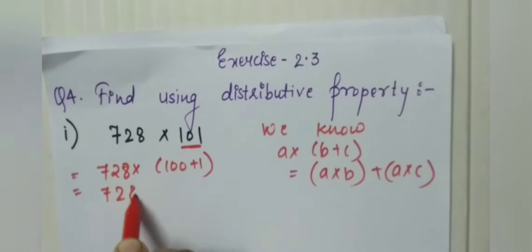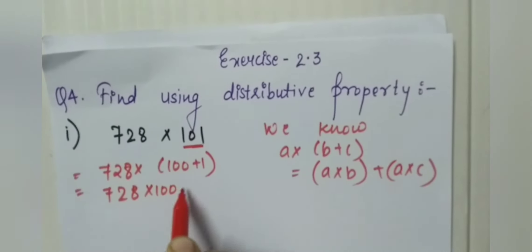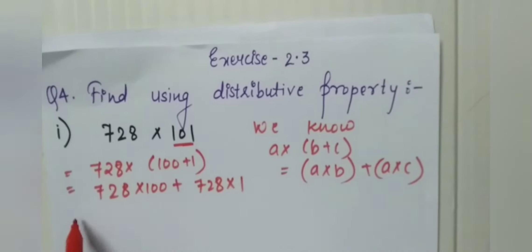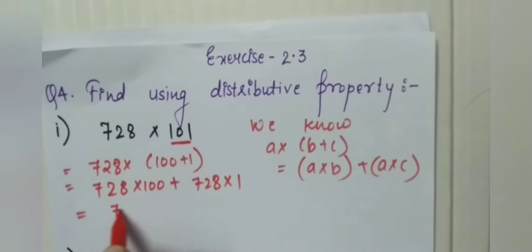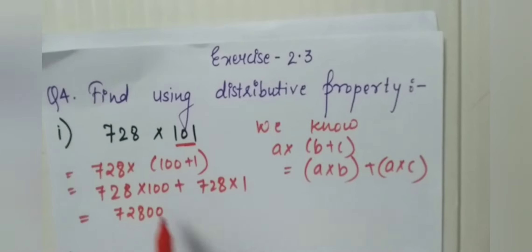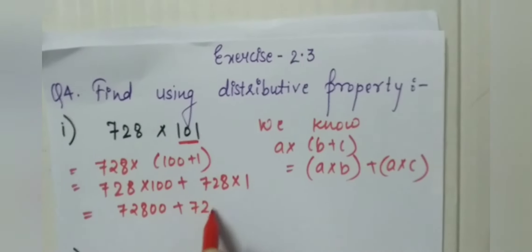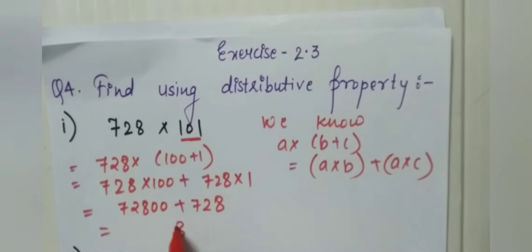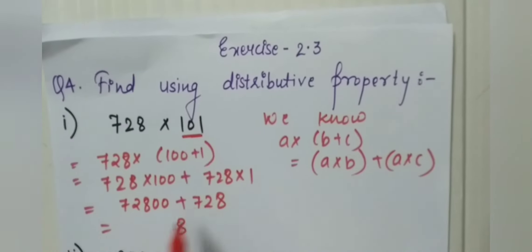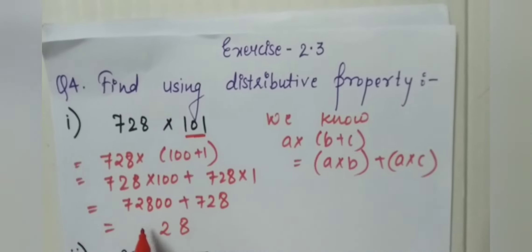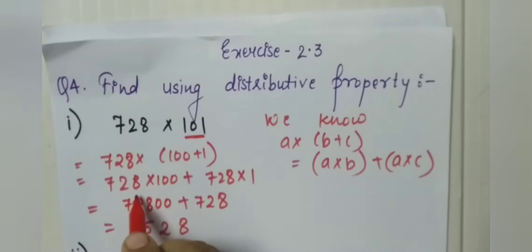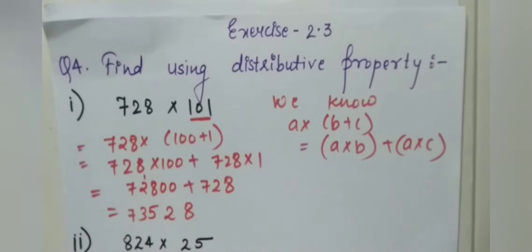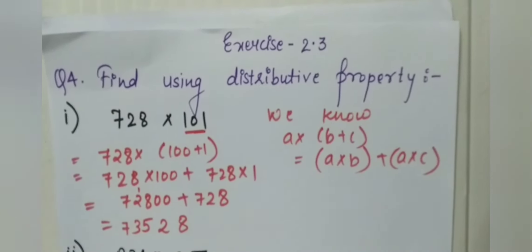Applying distributive property: 728 into 100 plus 728 into 1 equals 72,800 plus 728. Now we'll add: 0 plus 8 is 8, 0 plus 2 is 2, 8 plus 7 is 15 — write 5, carry 1 — 2 plus 1 is 3, and 7 comes as it is. So the answer is 73,528.